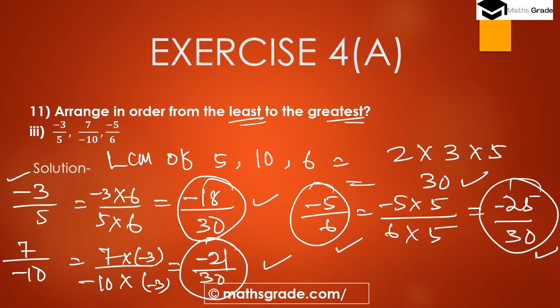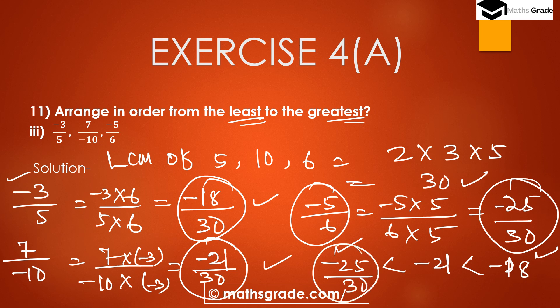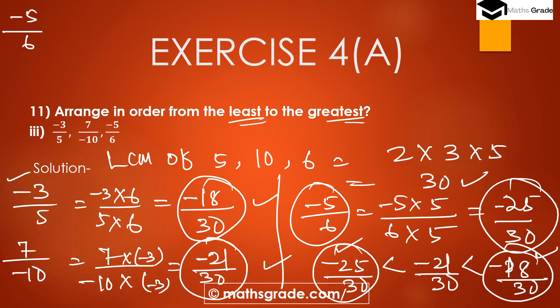Now compare the numerators: −18, −21, and −25. With negative signs, the greater the absolute value, the smaller the number. So −25 < −21 < −18. Therefore −25/30 (equivalent to −5/6) is the smallest, −21/30 (equivalent to 7/(−10)) is the middle, and −18/30 (equivalent to −3/5) is the greatest. So ascending order is: −5/6, then 7/(−10), then −3/5.